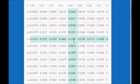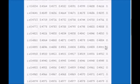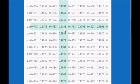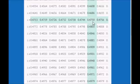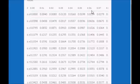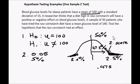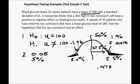Looking at the z-table, I find 0.475 in the center of the table. That corresponds to a z-score of 1.96 — it's in the row for 1.9 and the column for 0.06. Because the curve is symmetrical, the critical z-scores are negative 1.96 on the left and positive 1.96 on the right.